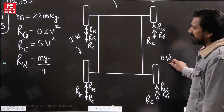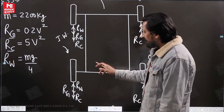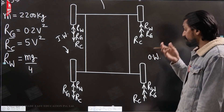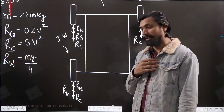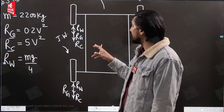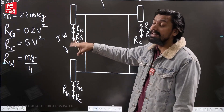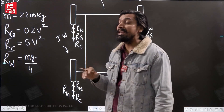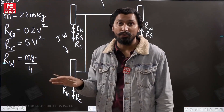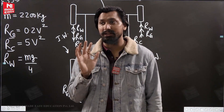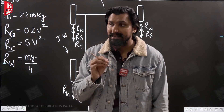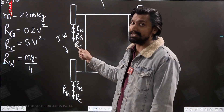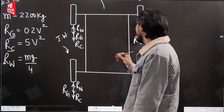You need to understand one key physics concept: the total net reaction can be zero on the inner wheels, but not on the outer wheels. If you've attended the gate class, the inner wheels will lose contact with the road, not the outer wheels. This is an important concept — inner wheels lose contact with the ground, not the outer wheels.